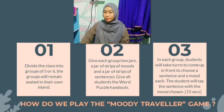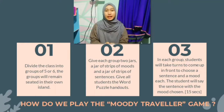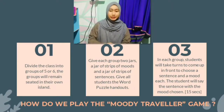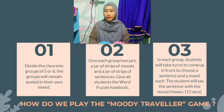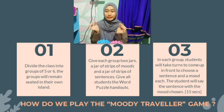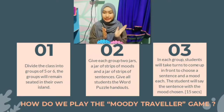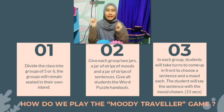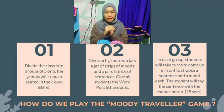All students will be given the word puzzle handouts each. Note that students will proceed with the game independently while the teacher supervises and assists if needed. Step 3: In each group or island, 1 student will come up front to choose a sentence and a mood from their respective jars. The student will say the selected sentence with the mood they got, with the help of intonation, facial expression, simple movement, and gestures.